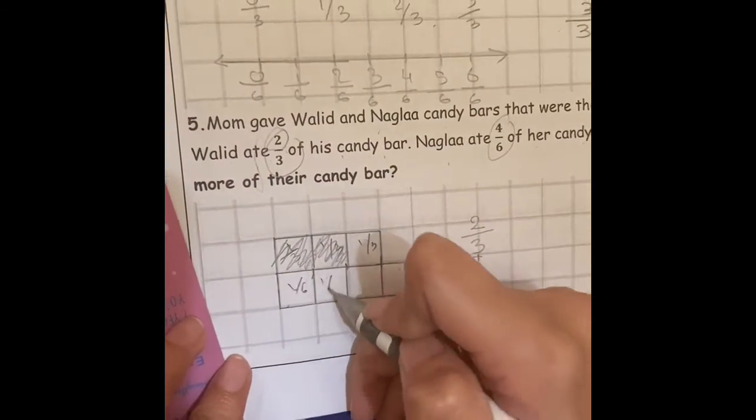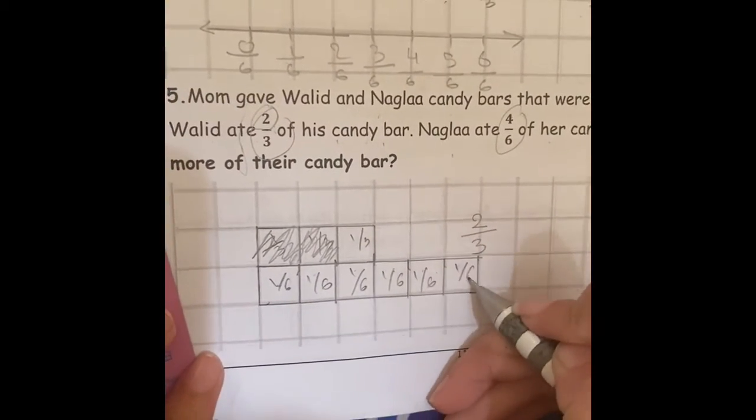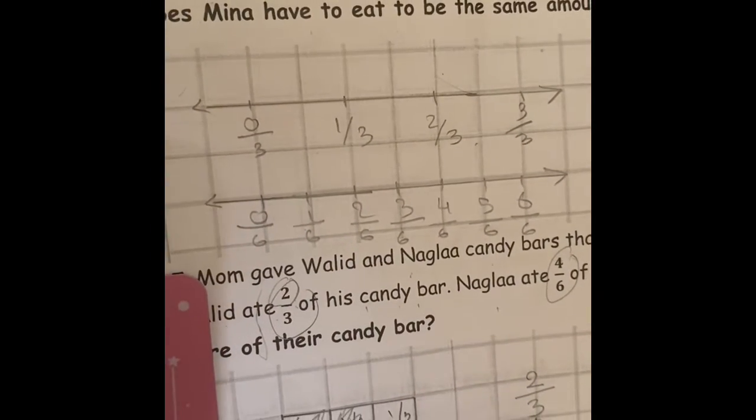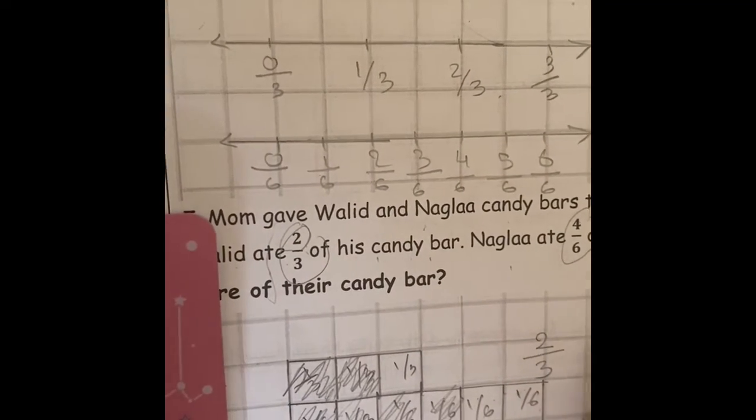1 over 6 each. And she ate 4 over 6 of her candy bar. So I'm going to shade 4 parts.